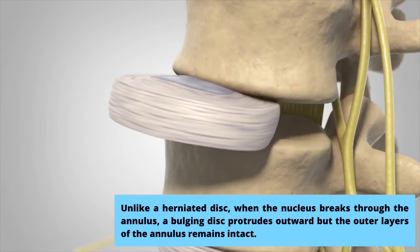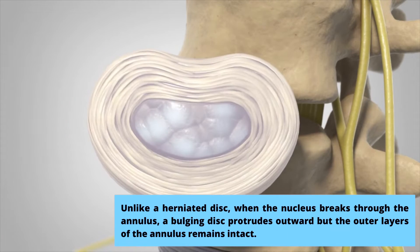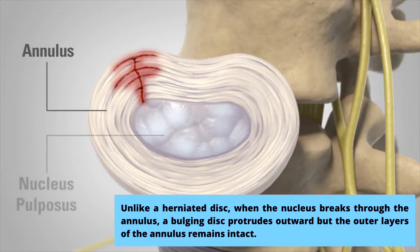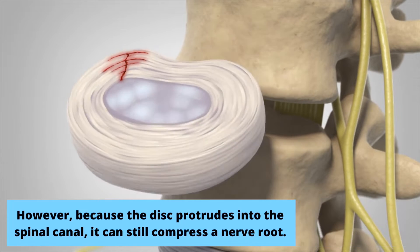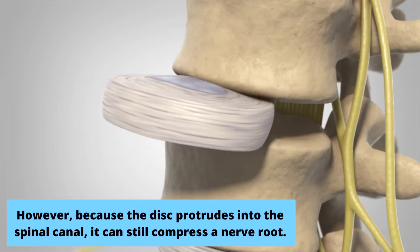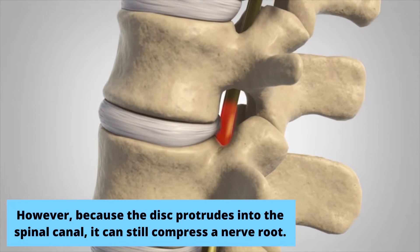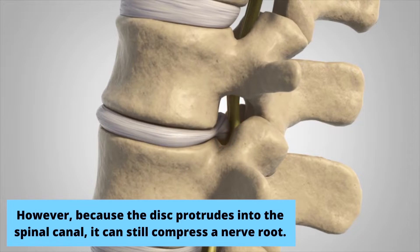Unlike a herniated disc, where the nucleus breaks through the annulus, a bulging disc protrudes outward but the outer layers of the annulus remain intact. However, because the disc protrudes into the spinal canal, it can still compress the nerve root and cause sensitivity and pain in that area.